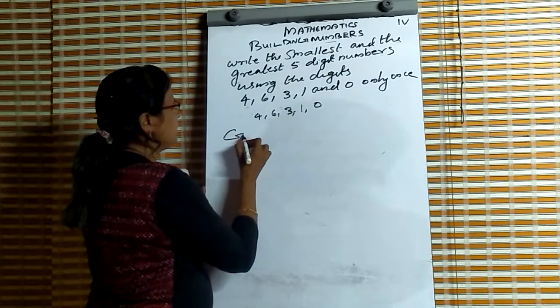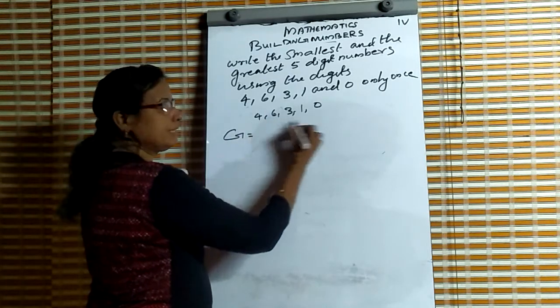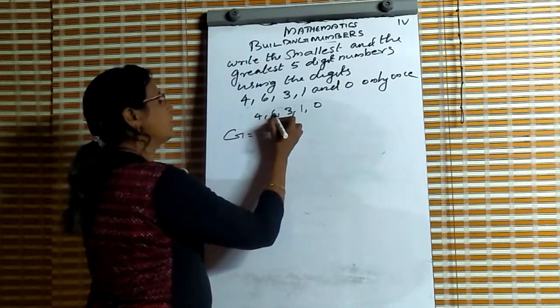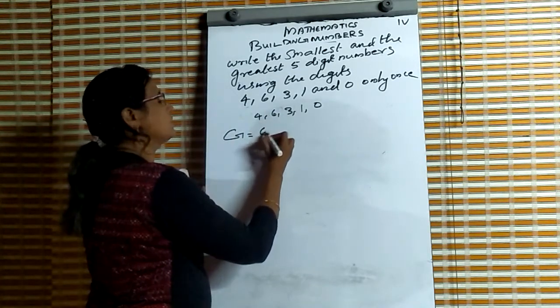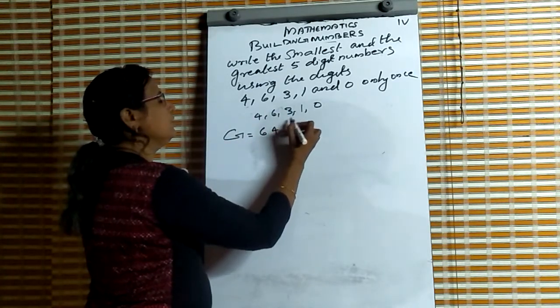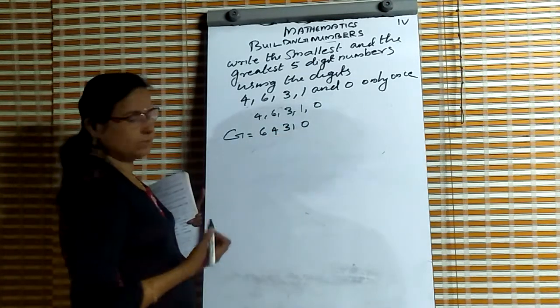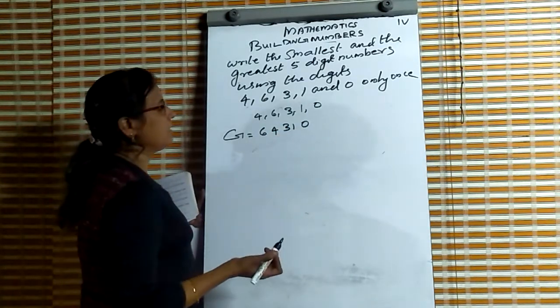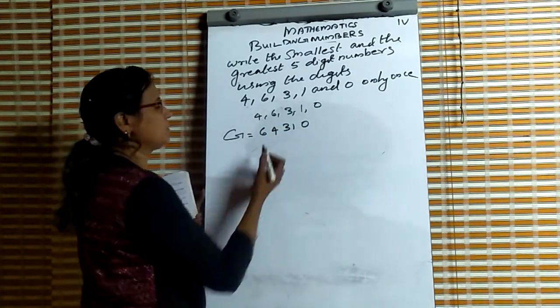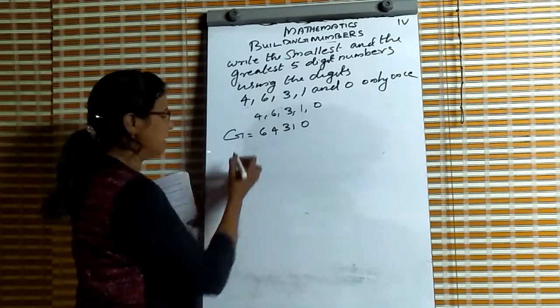For writing the greatest number, we write in decreasing order. Greatest digit is 6, then 4, 3, 1, 0. So the greatest number is 64,310.